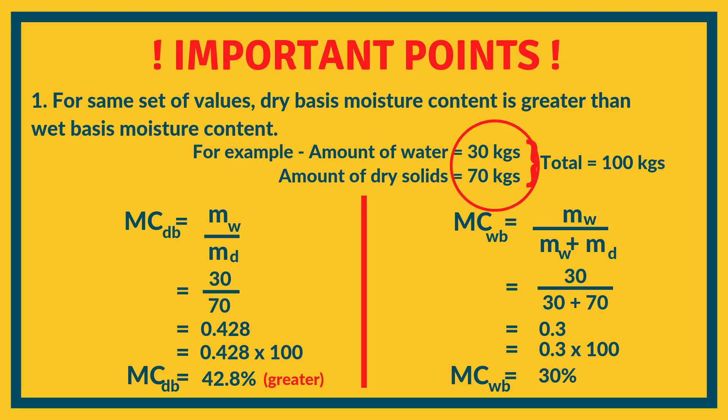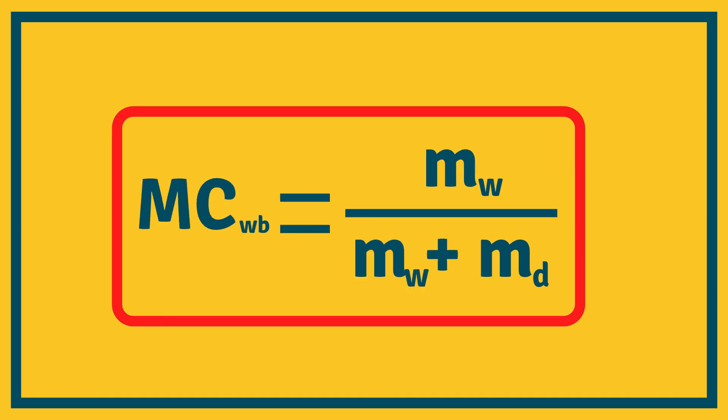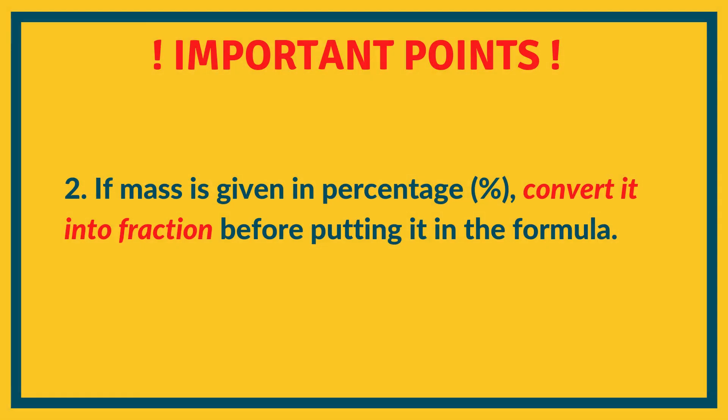So you can clearly observe that for the same set of values, the moisture content of dry basis is greater than wet basis. This is because in the dry basis formula the denominator has only md, whereas in the wet basis formula the denominator has md plus mw — so obviously wet basis is going to be smaller. Also, a lot of times in problems moisture content is given as a percentage, but you cannot use that percentage directly in the formula — you must convert it to a fraction first. For example, 52 percent becomes 0.52.